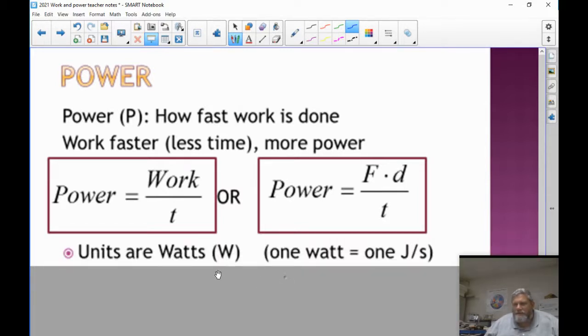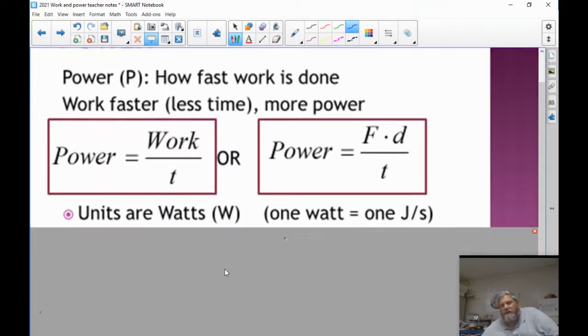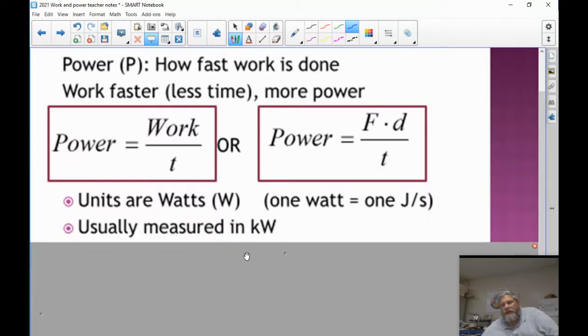So our equation for power is generally work divided by time. But since work is also F times D, we can also write it F times D over time. The units are watts. It's joule per second. And we give it a new name, watts. It's the same thing, what you see on a light bulb. A 100-watt light bulb does 100 joules of electrical work every second. It transfers 100 joules of electrical energy every second. And a lot of times we measure power in kilowatts, just depending on what we have.